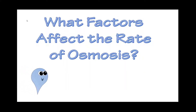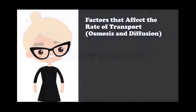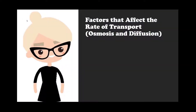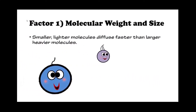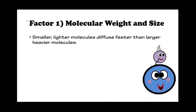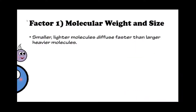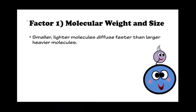What factors affect the rate of osmosis? Factors that affect the rate of transport in osmosis and diffusion include: size and weight of the molecules, size of the concentration gradient, the available surface area, and temperature. Factor number one: molecular weight and size. Smaller, lighter molecules diffuse faster than larger, heavier molecules.